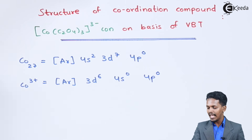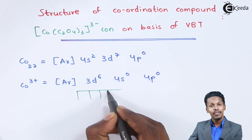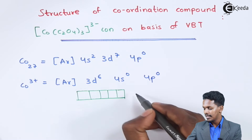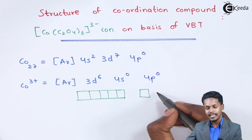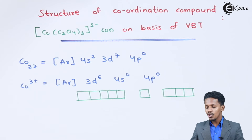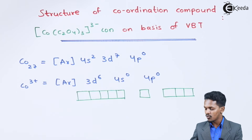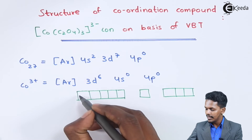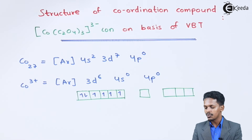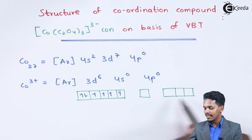The orbitals we have are 5 d orbitals — that is the 3d orbital — 1 single 4s orbital, and 3 4p orbitals. The 3d subshell is filled with 6 electrons, so we fill 6 electrons here, and the 4s and 4p remain empty.